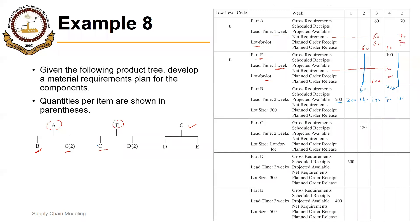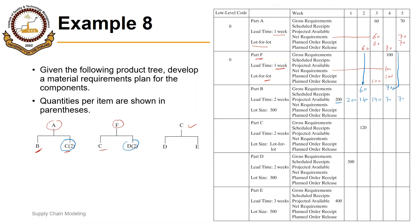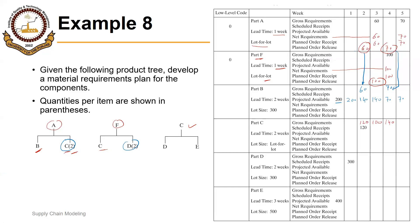Next we have part C. C is the component of both A as well as F. For each A we need two C's, so this 60 will become 120 and this 70 in week 4 will become 140. From F we will have this 100. This is the concept of exploding the requirements — 60 into 2 is 120, 70 into 2 is 140, and this 100 is as it is.